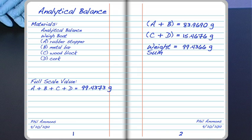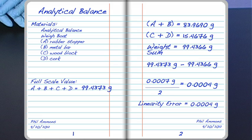On our balance, the two values are not equal. Let's take the difference. 99.4373 grams minus 99.4366 grams gives us 0.0007 grams. Because we took two measurements, let's divide by two, which gives us 0.0004 grams. Now we have successfully identified the linearity error at the balance's midpoint.